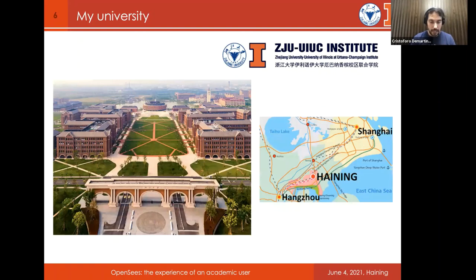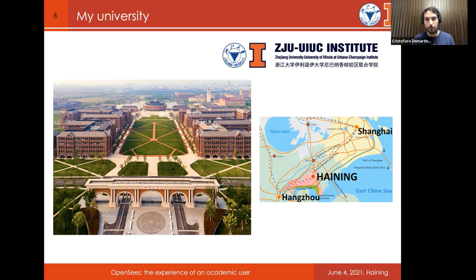This is my institute. It's very difficult to travel due to COVID-19 restrictions, but you are very welcome to come visit our institute. It's located in Haining, a small city in Zhejiang province between Hangzhou and Shanghai. We have several international institutes; I'm working in the ZJU-UIUC Institute, which is joined with UIUC. We have several positions, and if some of you are interested in joining as a PhD, postdoc, or faculty, please feel free to contact me.